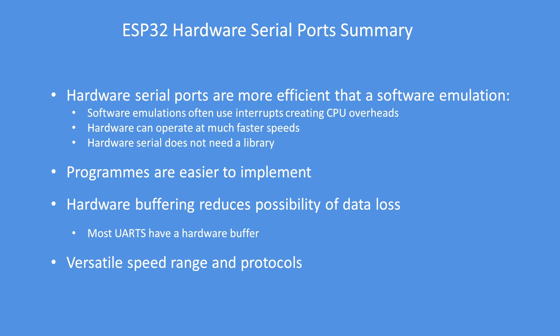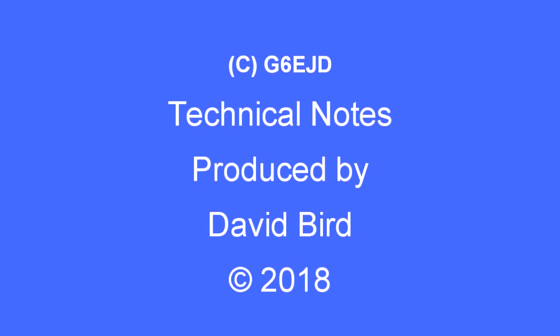In summary, the use of hardware serial ports is more efficient than software emulation like SoftwareSerial. Those emulations usually use interrupts, which creates a CPU overhead that can slow your programs down or make operation erratic. Hardware solutions generally operate at much faster speeds, don't need a library, are easier to implement, and because it's a hardware device it usually has a buffer — reducing the probability of data loss. You also get a versatile speed range and protocol options. Overall, that is the ESP32 serial port summary. I hope you found this technical note interesting and useful.